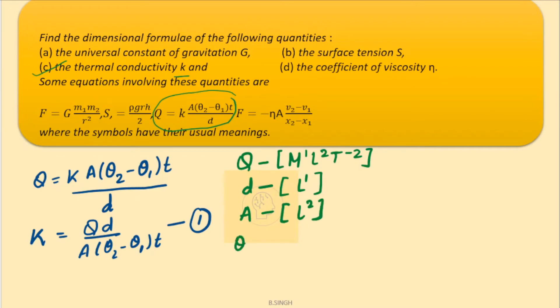theta 2 minus theta 1, that is the temperature. So, temperature has the dimensions of k for degree kelvin and t is the time. So, time has a unit seconds. So, seconds is t to the power 1.